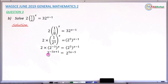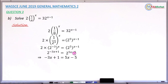We have now reduced our index equation to two index numbers — one on the left, one on the right — both with base 2. Since the bases are the same, the powers must be equal. This means minus 3x plus 1 must equal 5x minus 5. We now collect the like terms and solve this equation.